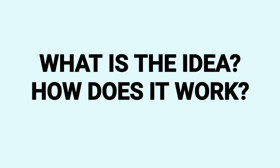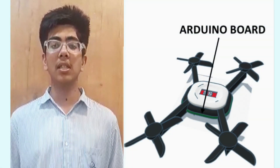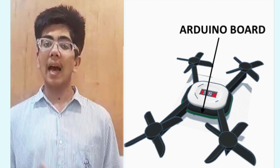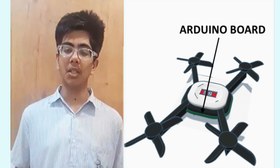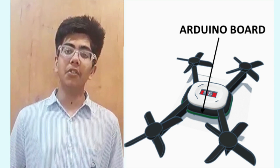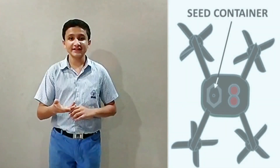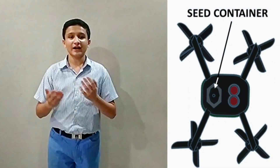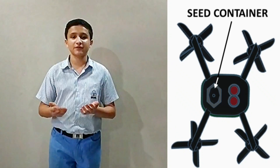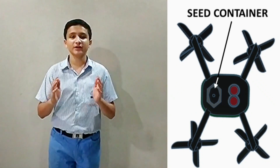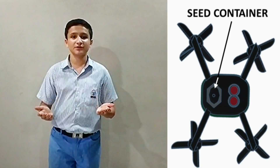Now comes the prototype of the solution. We will solve this problem by using a drone. Our drone will have a special contraption at the end which will be controlled by an Arduino board. A seed container will be attached to the drone and will have a system that controls the opening and closing of the container, dispersing the seeds stored in it.